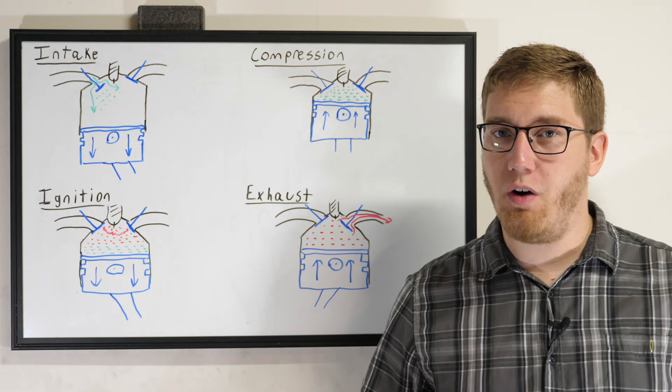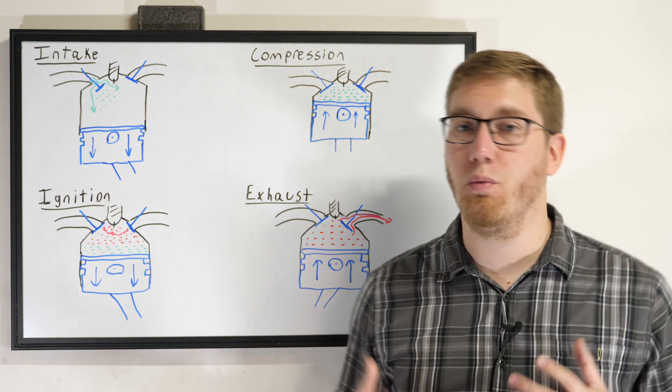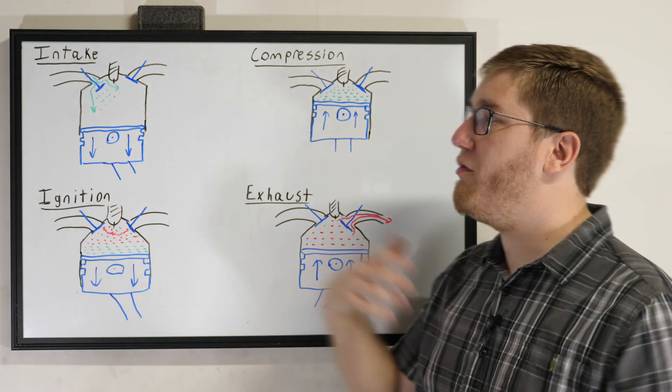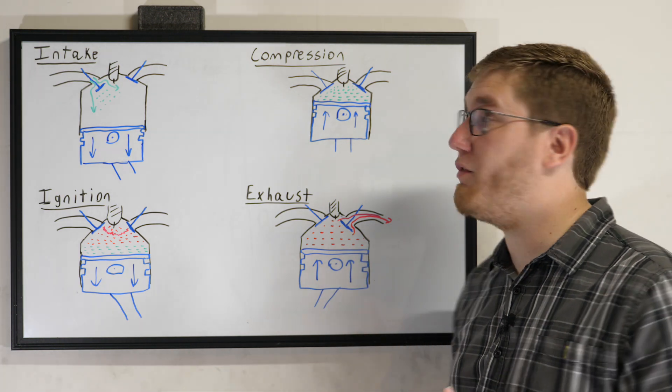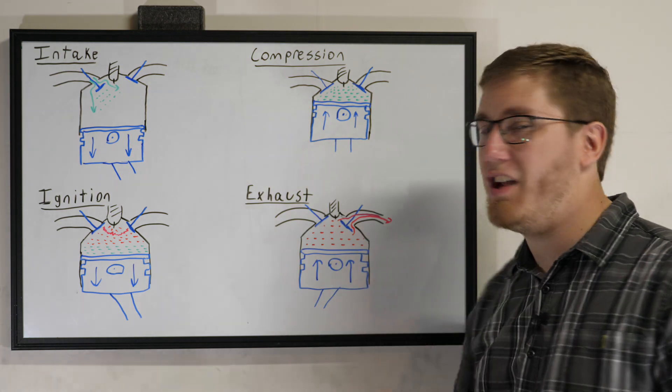Before we get into all of that, it's good to start with a quick overview of how a four-stroke engine works. So very quick, we have four different stages in a four-stroke engine. We have our intake phase, compression phase, ignition, and exhaust.